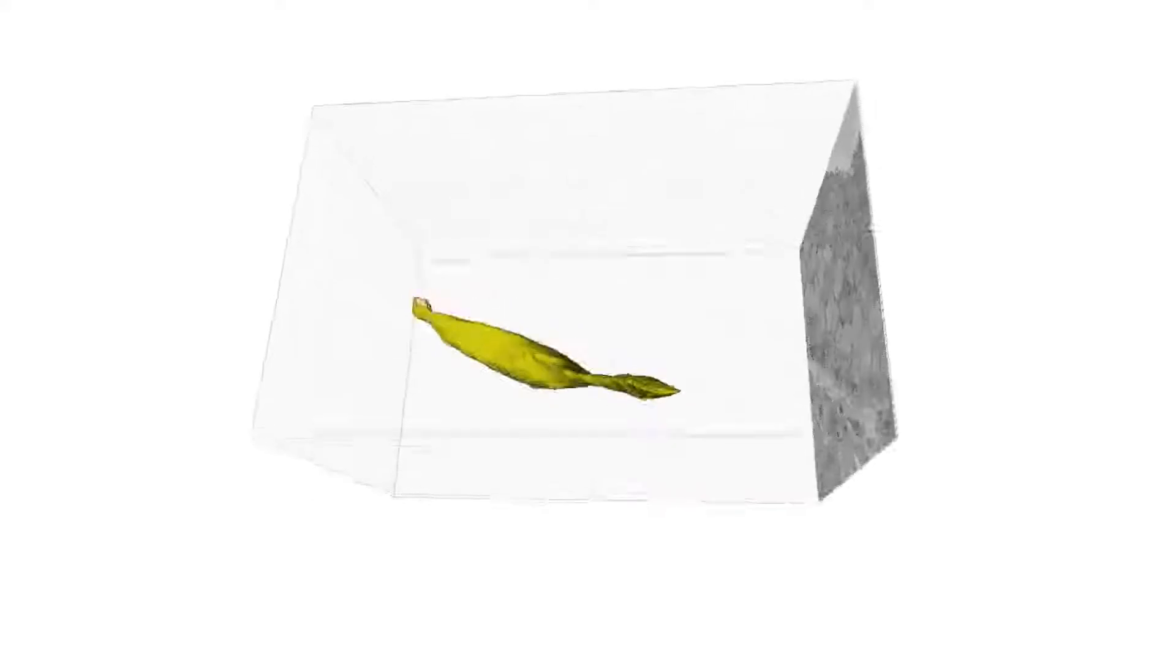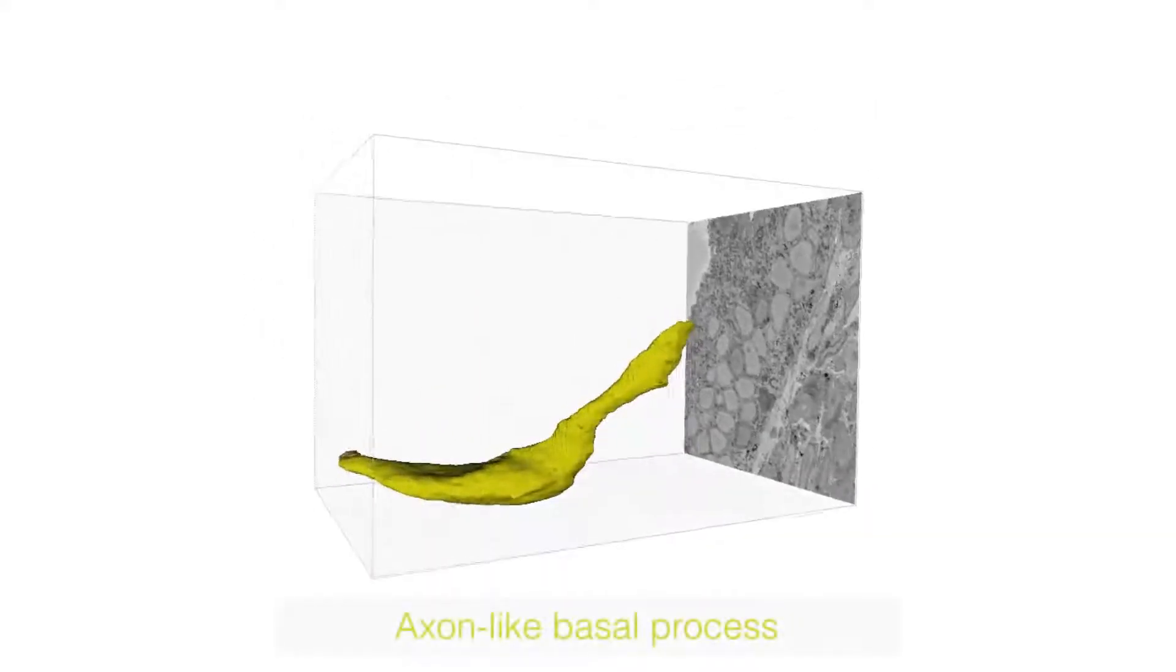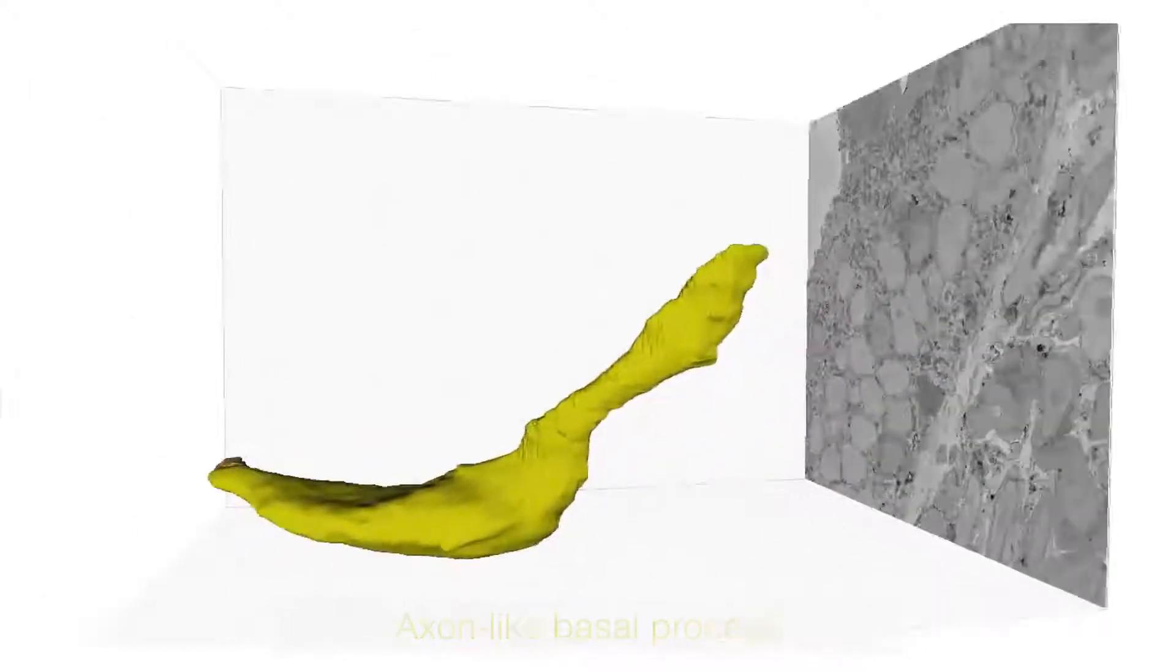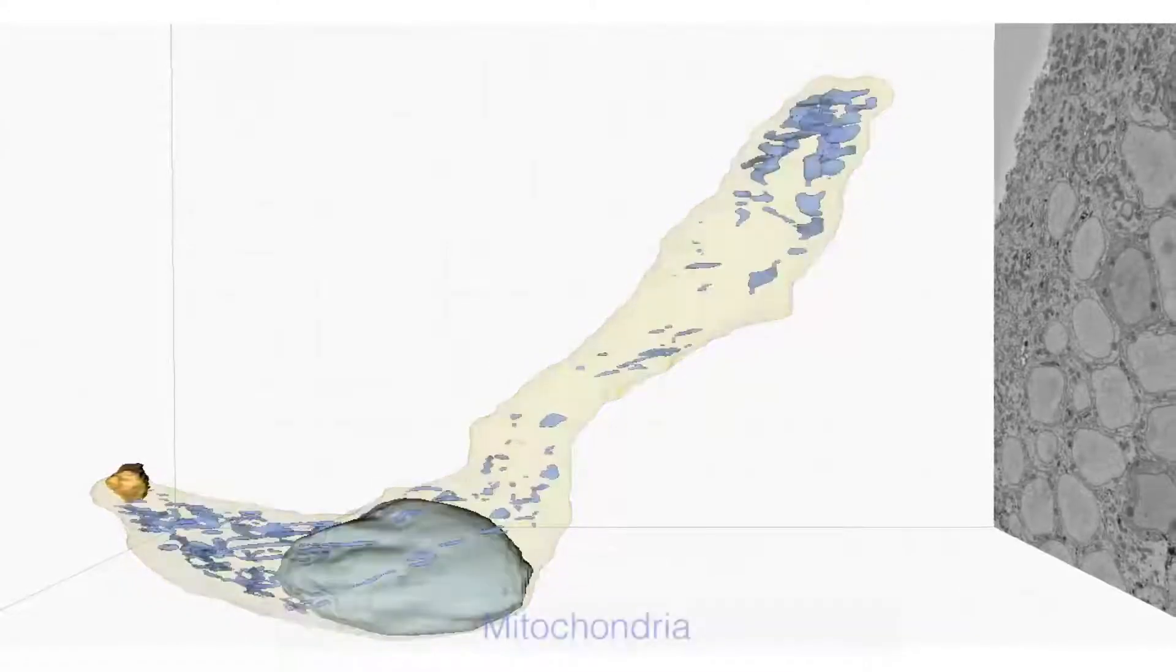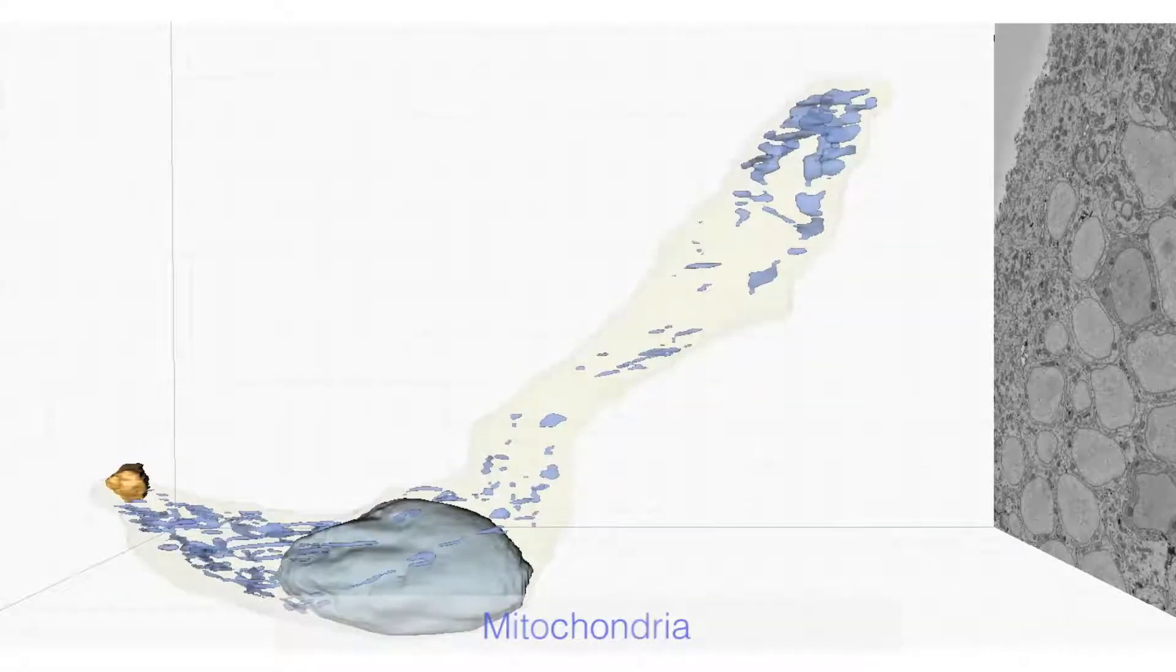In light green, the enterendocrine cell is revealed at the ultra-structural level. On the left-hand side, we have these hair-like structures called microvilli that are exposed to the gut lumen.